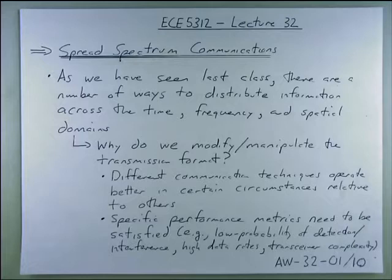As we have seen in the last class, there are a number of ways to distribute information across the time, frequency, and spatial domains. Why do we modify or manipulate the transmission format? Different communication techniques operate better in certain circumstances relative to others. Specific performance metrics need to be satisfied, for example, low probability of detected interference, high data rates, frequency deployment.